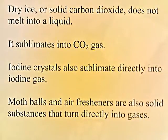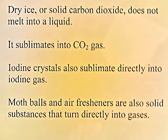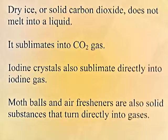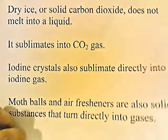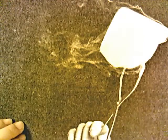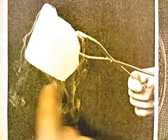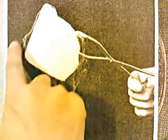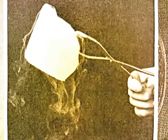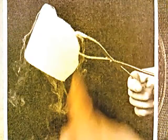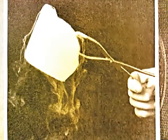Dry ice — solid carbon dioxide — does not melt into a liquid; it sublimes into CO₂ gas. Iodine crystals also sublimate directly into iodine gas. Mothballs and air fresheners are also solid substances that turn directly into gases. Here's a picture of dry ice — notice the steam-like substance coming off it. That's carbon dioxide gas coming directly off the solid carbon dioxide: sublimation, a solid turning directly into a gas.